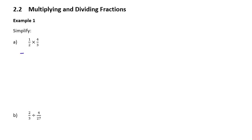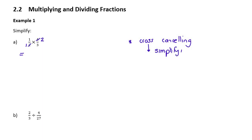If we look at example 1a, it says simplify, and there's a fraction times a fraction. The best way to do this is something called cross-cancelling. Cross-cancelling is when you look for something at the top and something at the bottom that can simplify with each other. In this case, two goes into itself once, and two goes into four twice. So cross-cancelling is simplifying something on the top with something on the bottom.